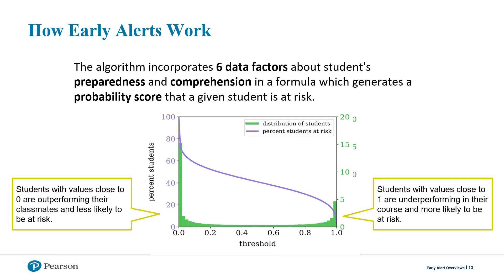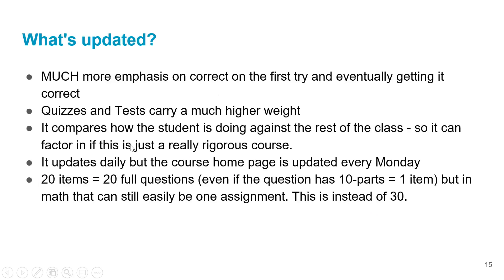A student with a value close to zero is outperforming their classmates and less likely to be at risk. A student with a value close to one is underperforming and more likely to be at risk. What's been updated? There's a lot more emphasis on students getting questions correct on the first attempt, as well as looking at how long it takes them to get it correct.